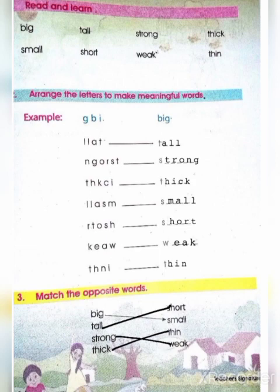T, N, G, R, T, O, S, H, N, A — Short. S, M, A, L, L — Small. Next is K, E, A, W — Weak. Next is T, H, N, I — Thin. Thin means patla.